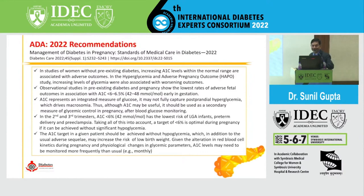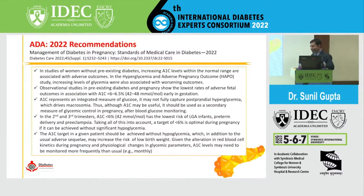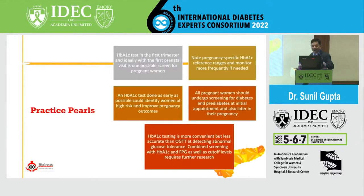In the second and third trimester, HbA1c less than 6 is associated with the lowest risk of LGA, preterm delivery, and preeclampsia. Taking all this into account, less than 6 is optimal control. A1c targets should be achieved without hypoglycemia, which in addition to adverse sequelae may increase the risk of low birth weight. Given the alteration in red blood cell kinetics during pregnancy and physiological changes in glycemic parameters, A1c levels may need to be monitored more frequently — approximately once a month.